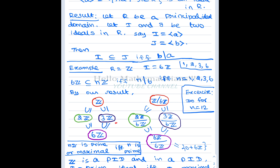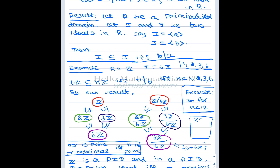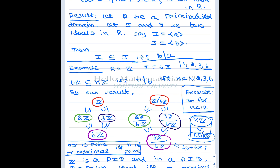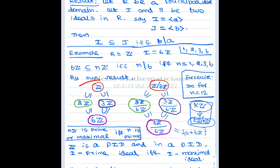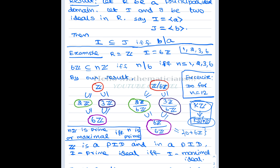In general the correspondence sends kZ to kZ mod nZ. So to find all ideals in Z mod nZ, you find all ideals containing nZ in Z and transfer them to the quotient. Once you identify all ideals containing 6Z, you simply map them across to get all ideals of Z mod 6Z.